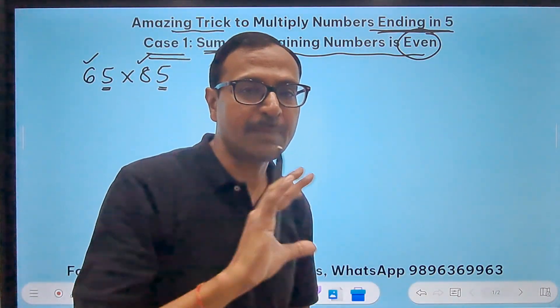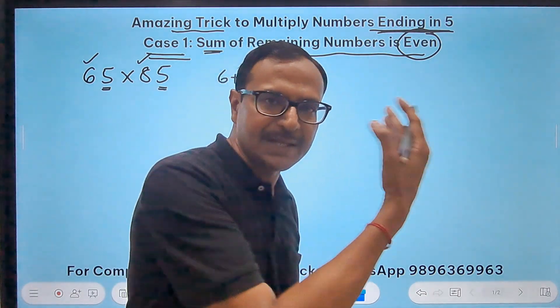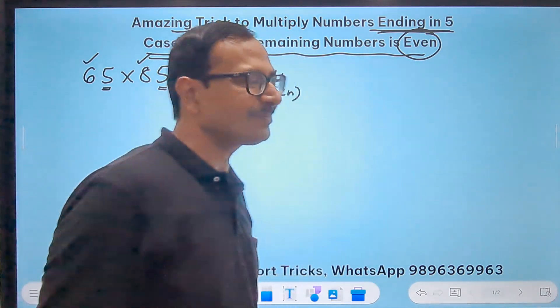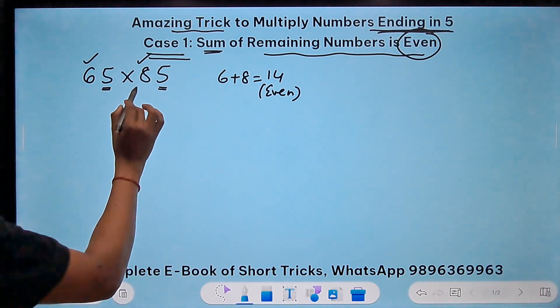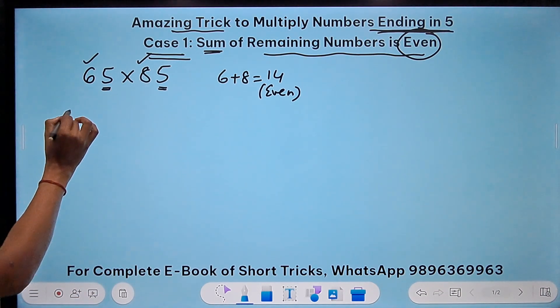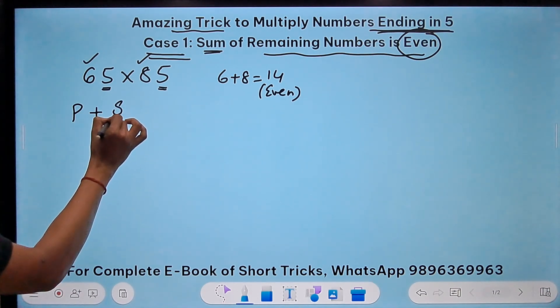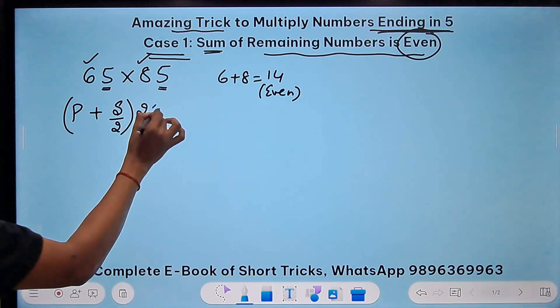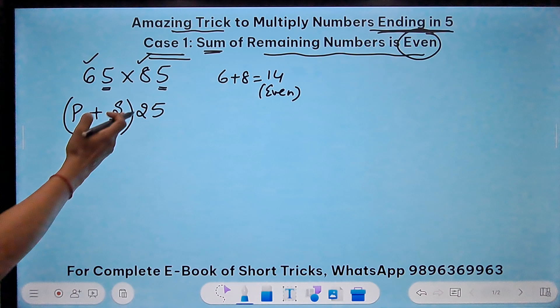What happens when the sum of the remaining numbers is odd we will do in the next slide, we'll complete it in this video itself. The trick is known as P plus S upon 2 followed by a 25.